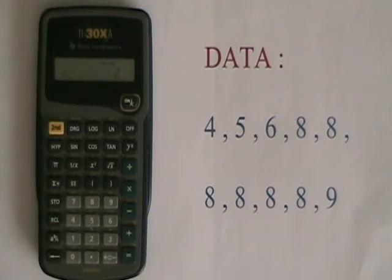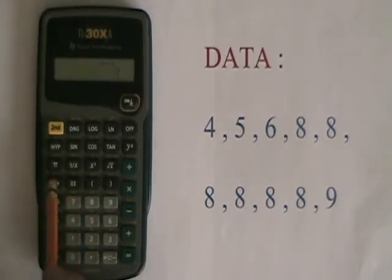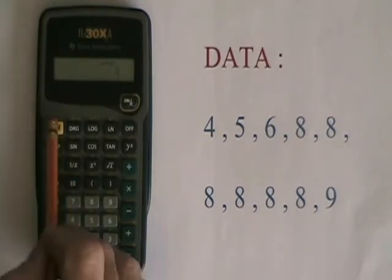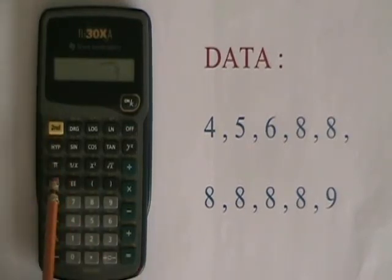Now, if I accidentally enter 7 sigma plus when I meant to enter 6, I can correct the error by doing second function sigma plus, which means sigma minus, and that removes the 7. The n equals 2 confirms it's gone.